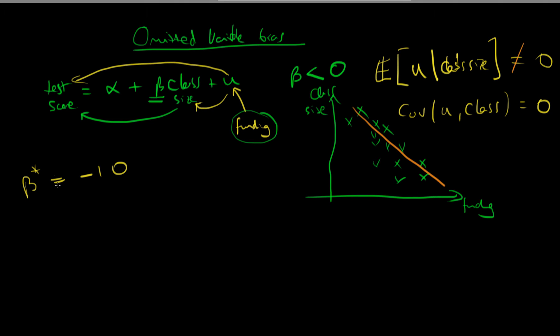Well, is this result likely to be upwardly or downwardly biased of the true value of beta? Well, in a sense, what class size is doing here is doing some of the work of funding. It's going to be taking some of the credit away from funding because of this negative correlation between the two. So it's likely to overstate the effect of class size on test scores.